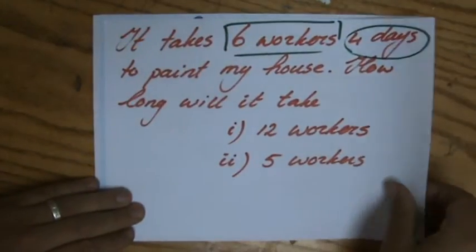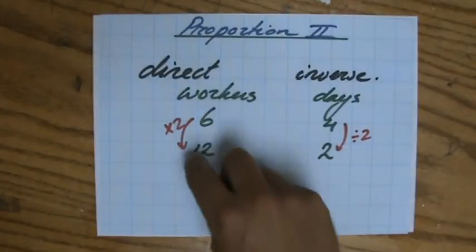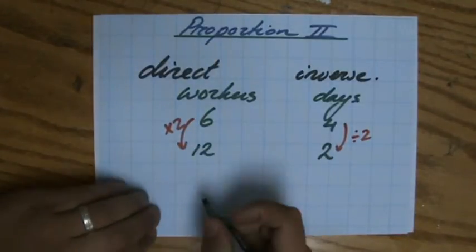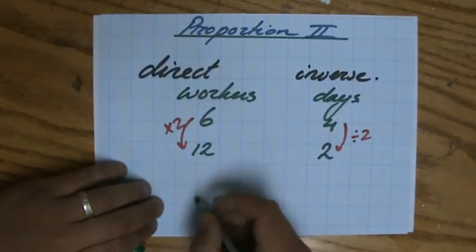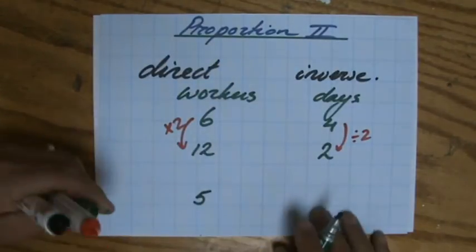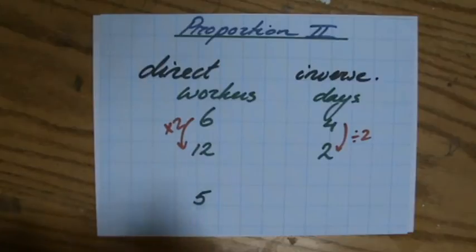What about five workers? Now, again, everybody saw perhaps that was a multiple of six, so times it by two. But what about five workers? It's a little bit less straightforward. So what did I tell you?